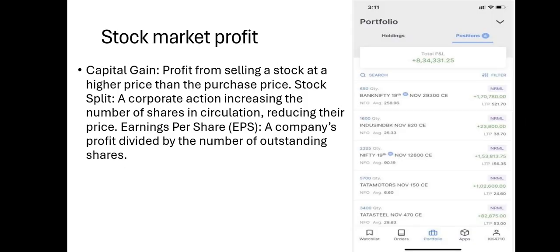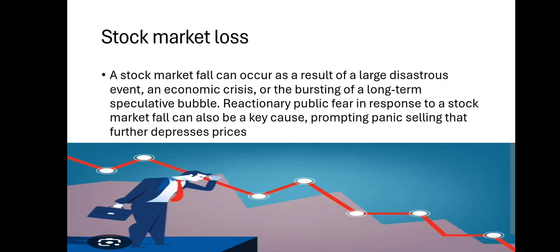Stock market profit — capital gain: profit from selling a stock at a higher price than the purchase price. Stock split: a corporate action increasing the number of shares in circulation, reducing their price. Earnings per share, or EPS: a company's profit divided by the number of outstanding shares.